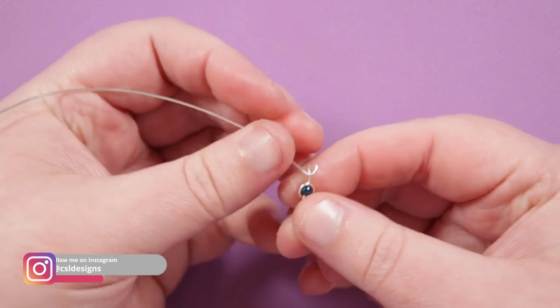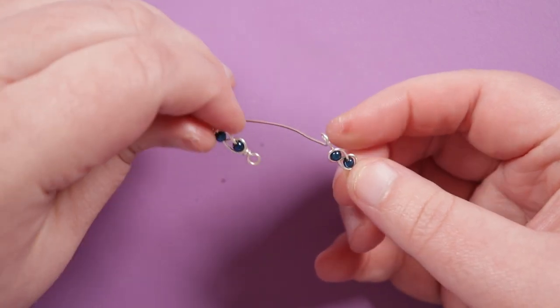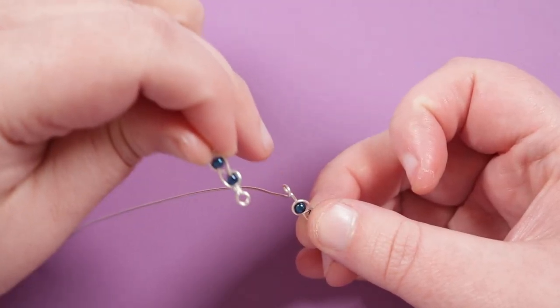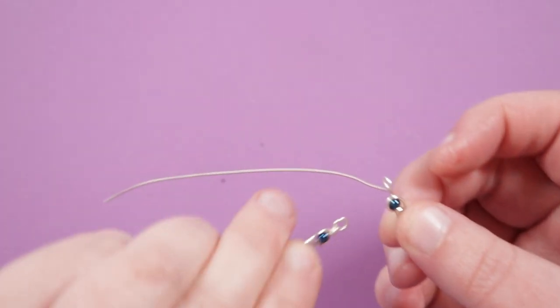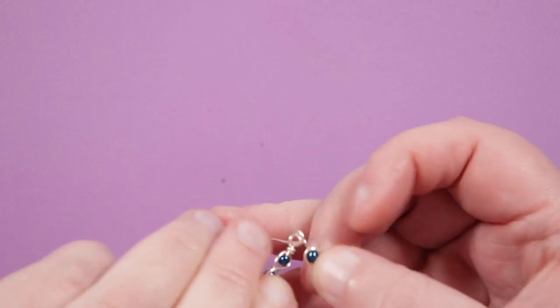So I've already made a previous link here and to connect these two I want them to sit like this so this loop that's sideways is gonna then connect to a loop that's flat so I'm just gonna follow the path and then get the end of the wire through the loop bring it all the way up.